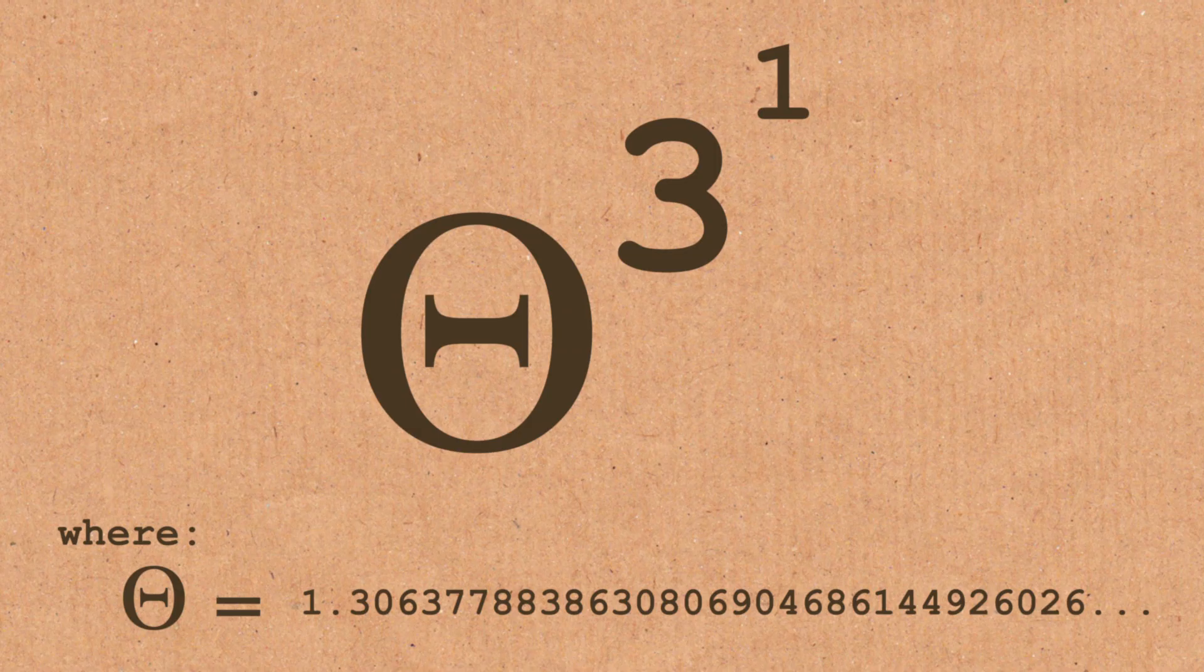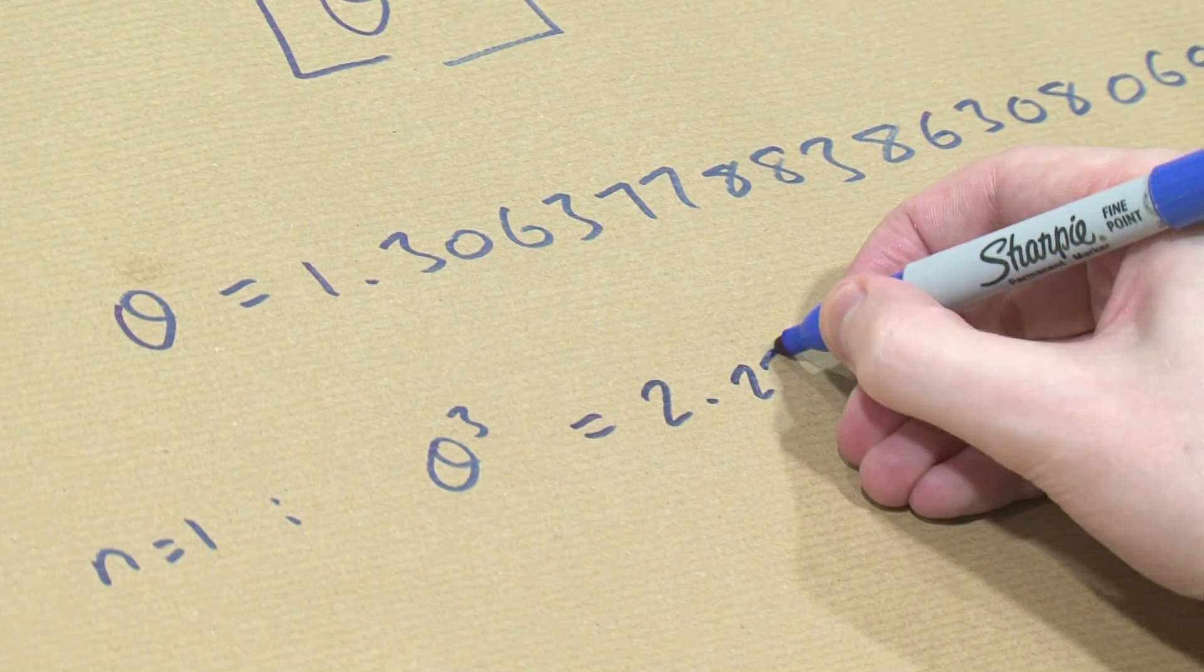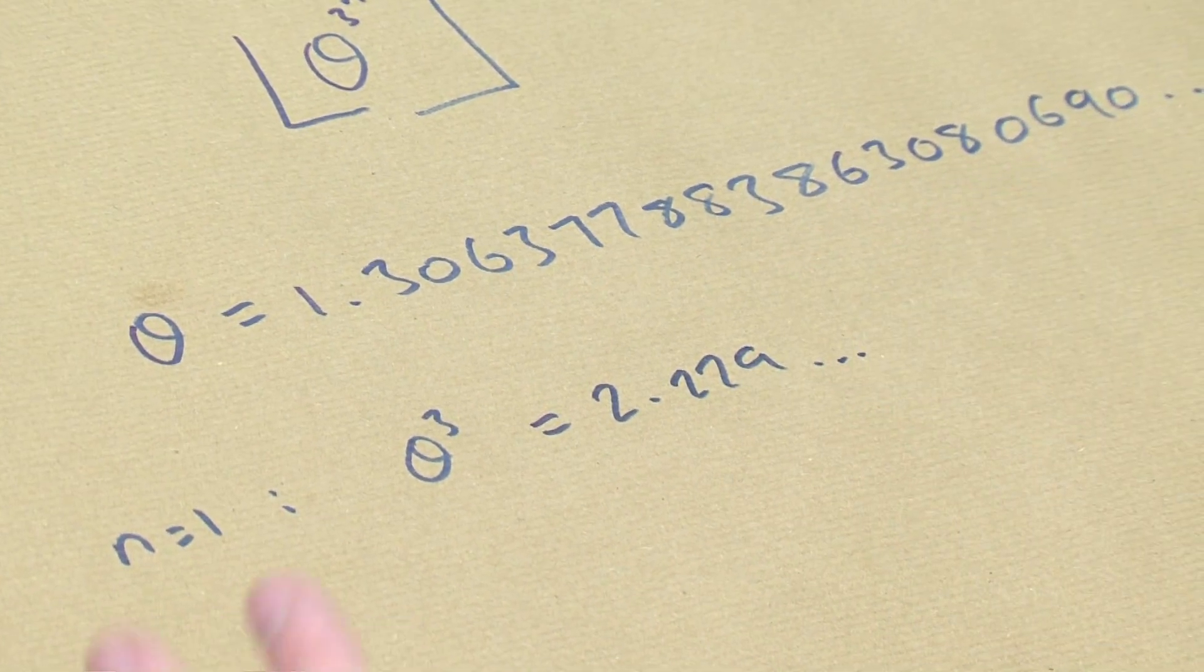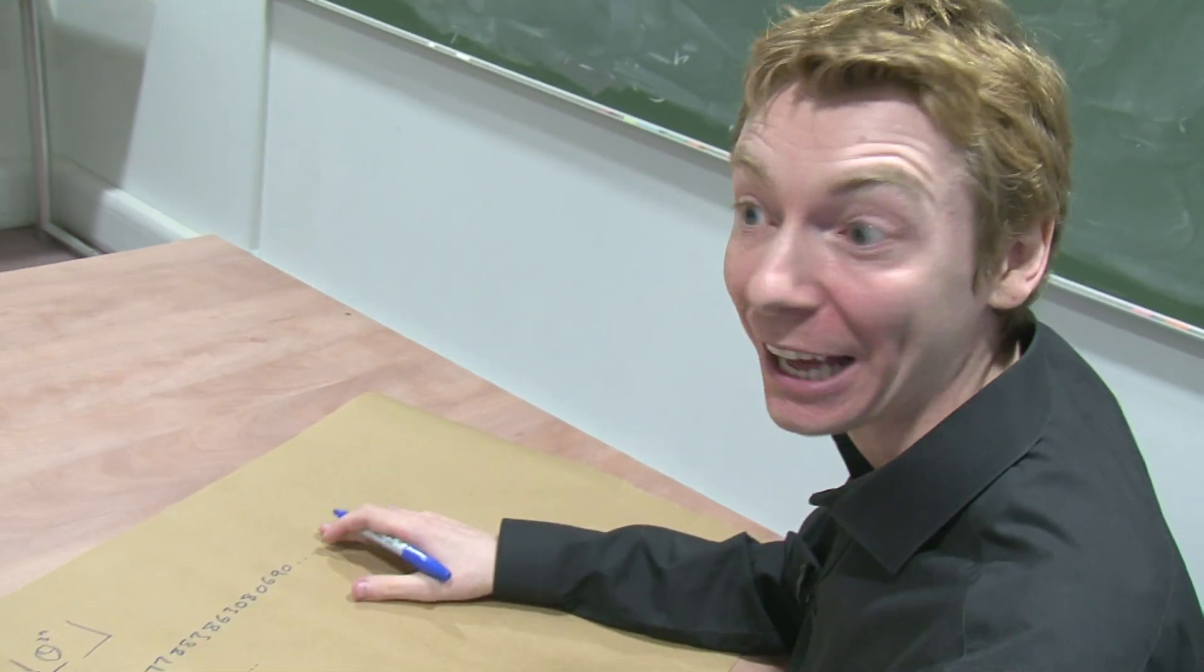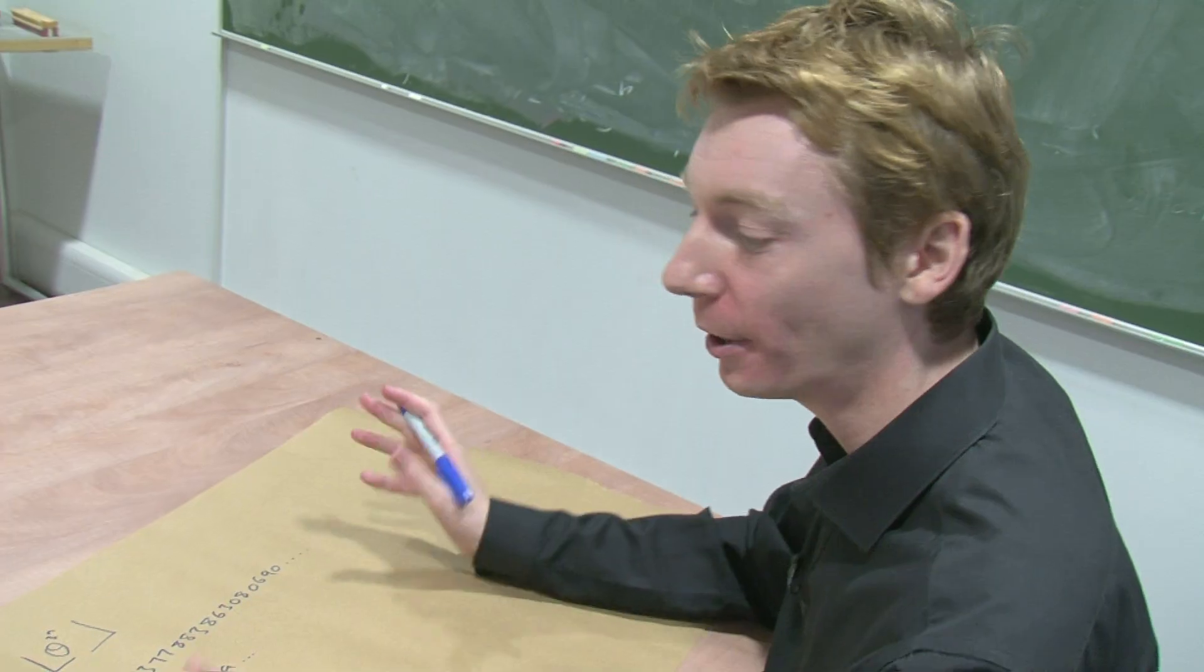And what is the answer? What is theta cubed? Theta cubed is 2.229 something, something, something. You round it down so the prime is 2. Hey, we've got that is prime. And in fact, every number should be prime. Let's try the next one.